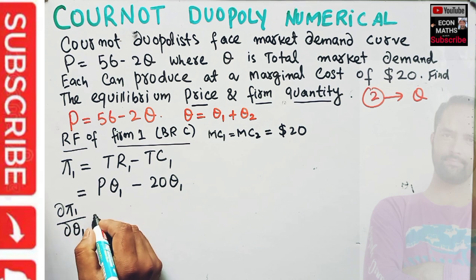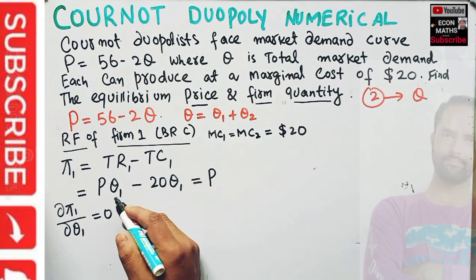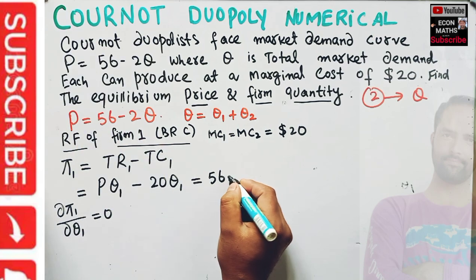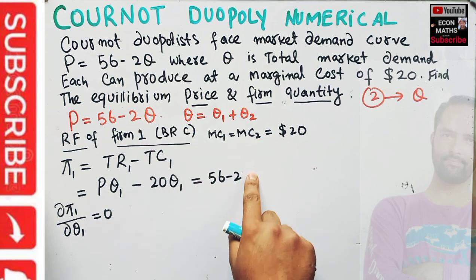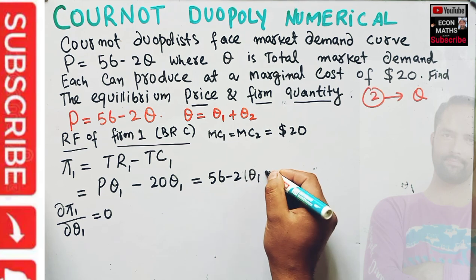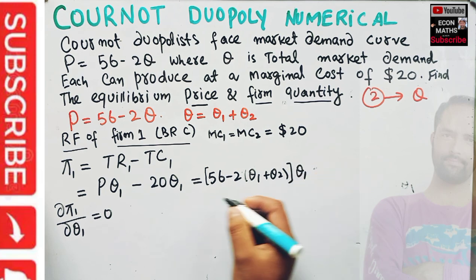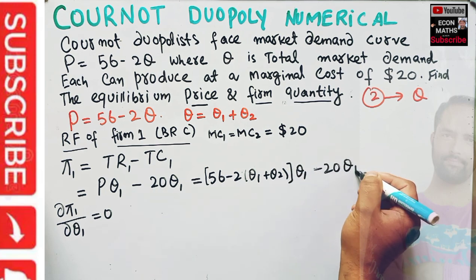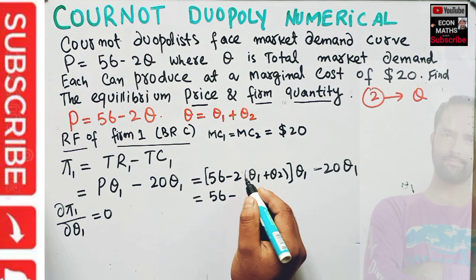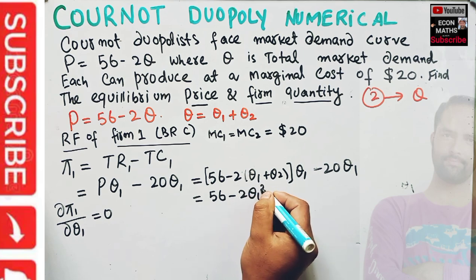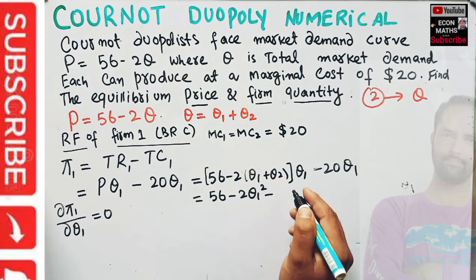Let's rewrite the profit function. Since P = 56 - 2Q and Q = Q1 + Q2, substituting gives us P = 56 - 2(Q1 + Q2). Multiplying through by Q1 and subtracting total cost, the profit function becomes: π = 56·Q1 - 2·Q1² - 2·Q1·Q2 - 20·Q1.